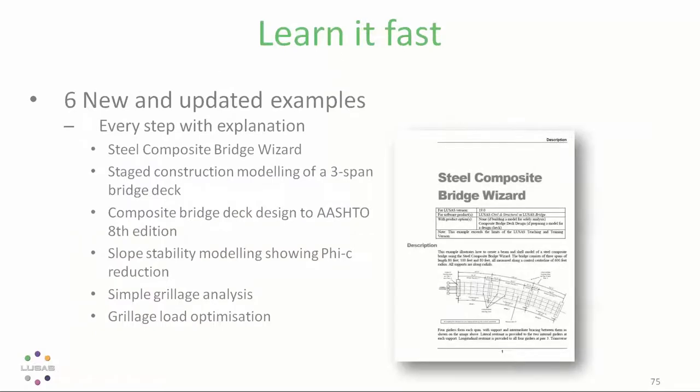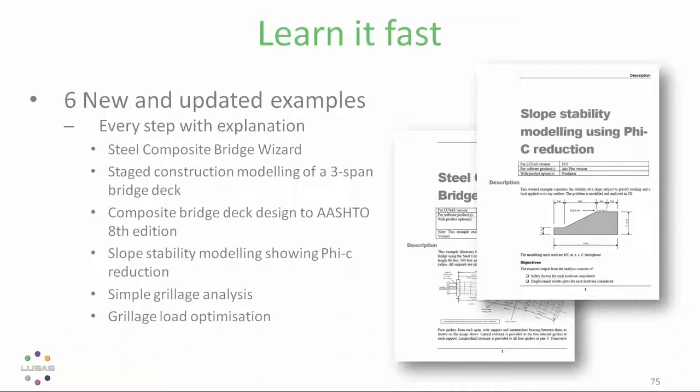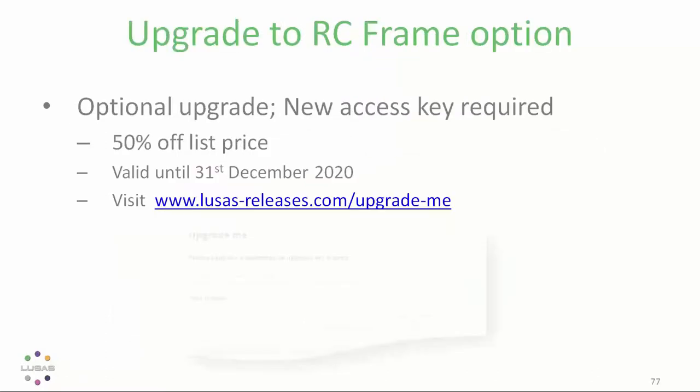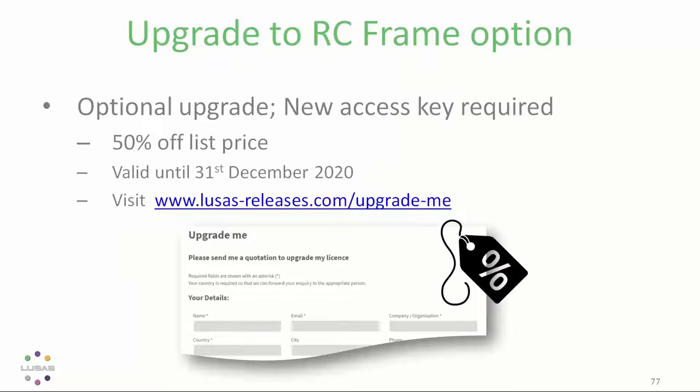In this new release, there are six new and updated examples in the online manual to help you go through each of the new tools. And of course, the online help also has details of what's new in version 19, some of which we've not had time to cover today. So just as a reminder, if you're interested in the RC design module, you can upgrade to that 50% off if you order it before the end of the year. You can either simply completely upgrade form here or you can send myself or Philip an email.